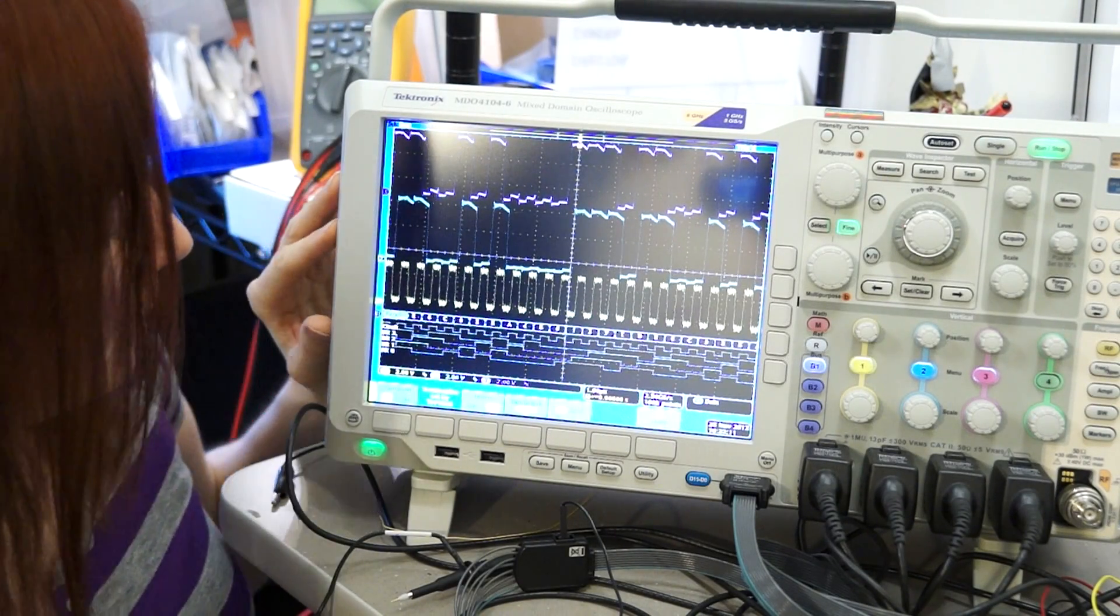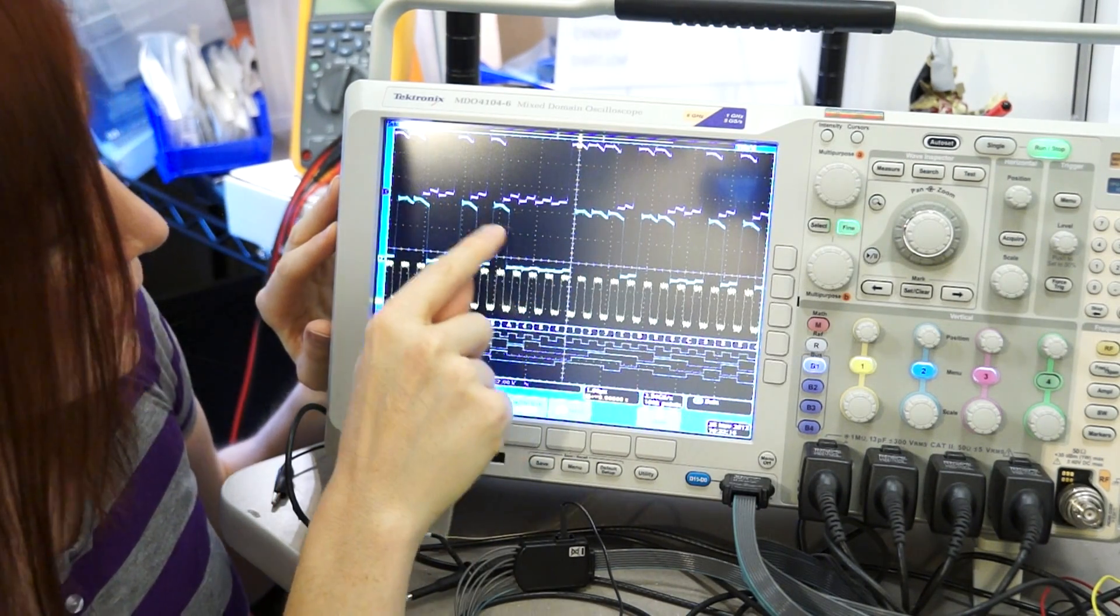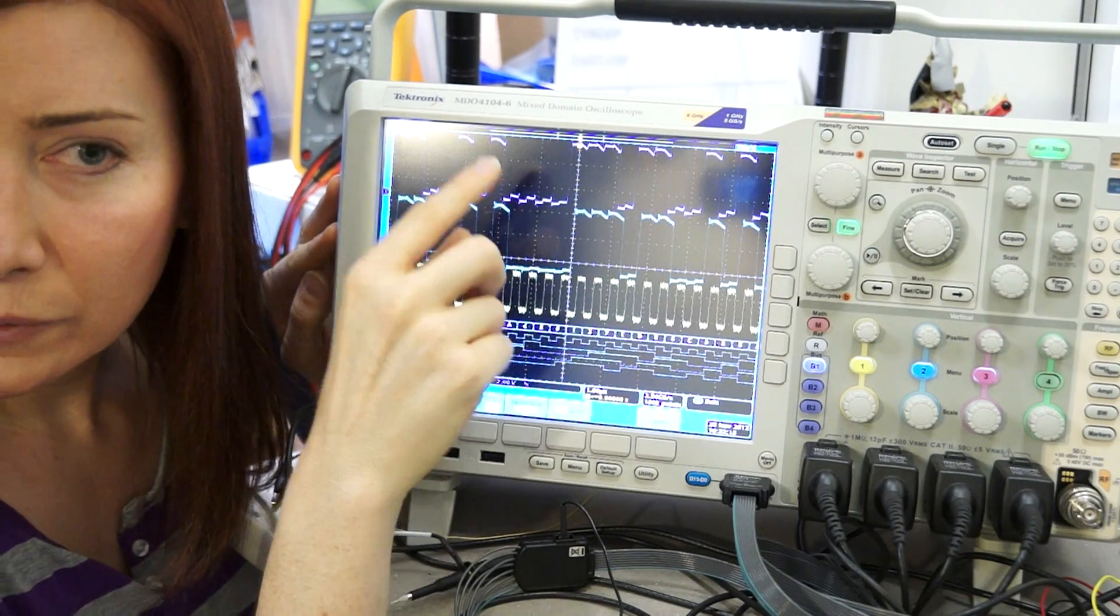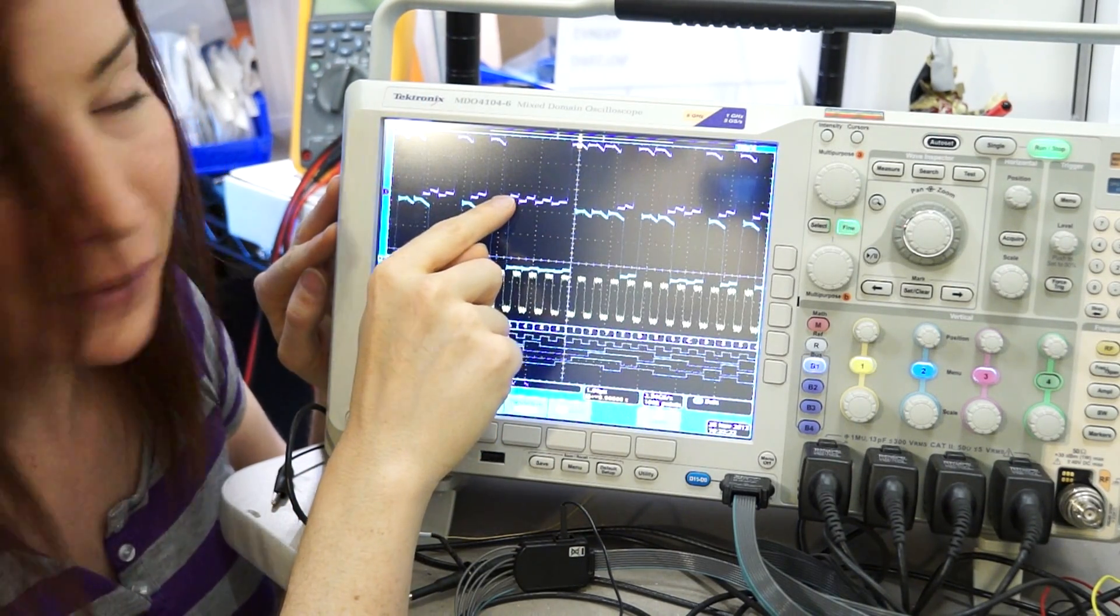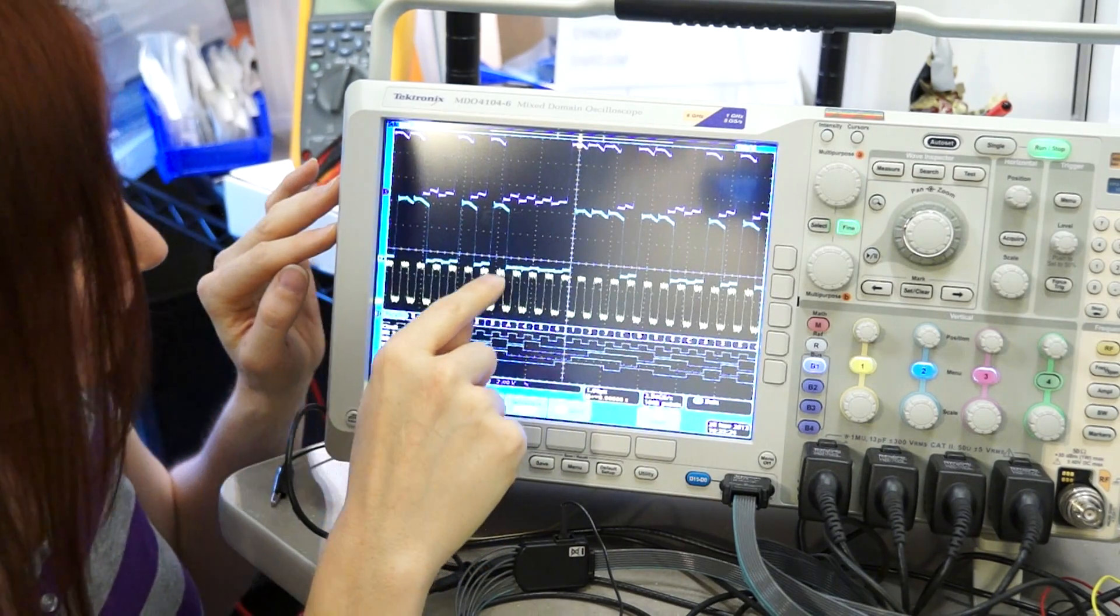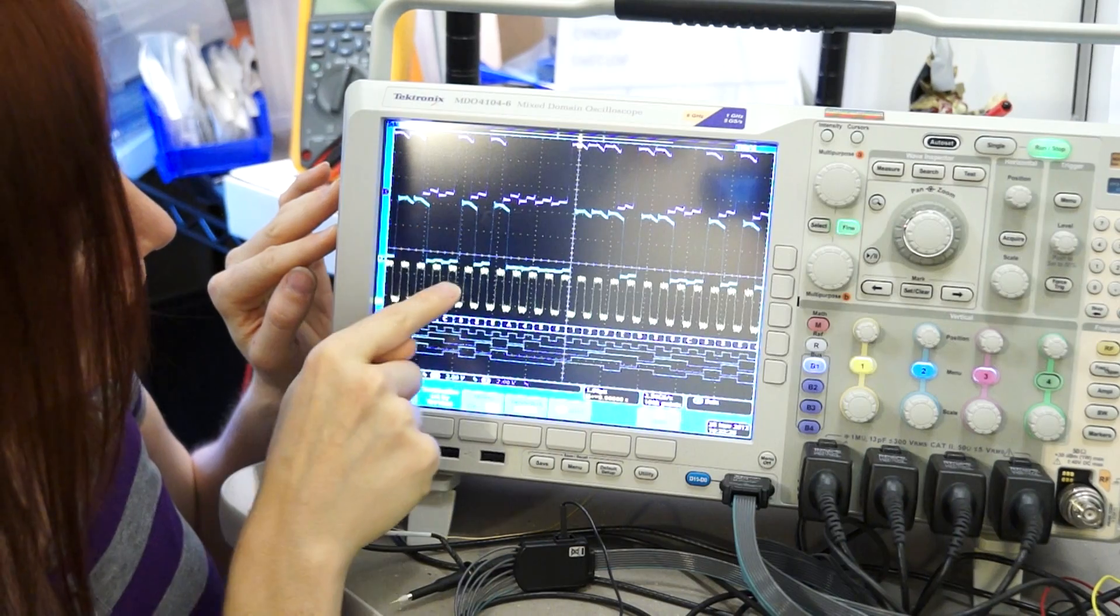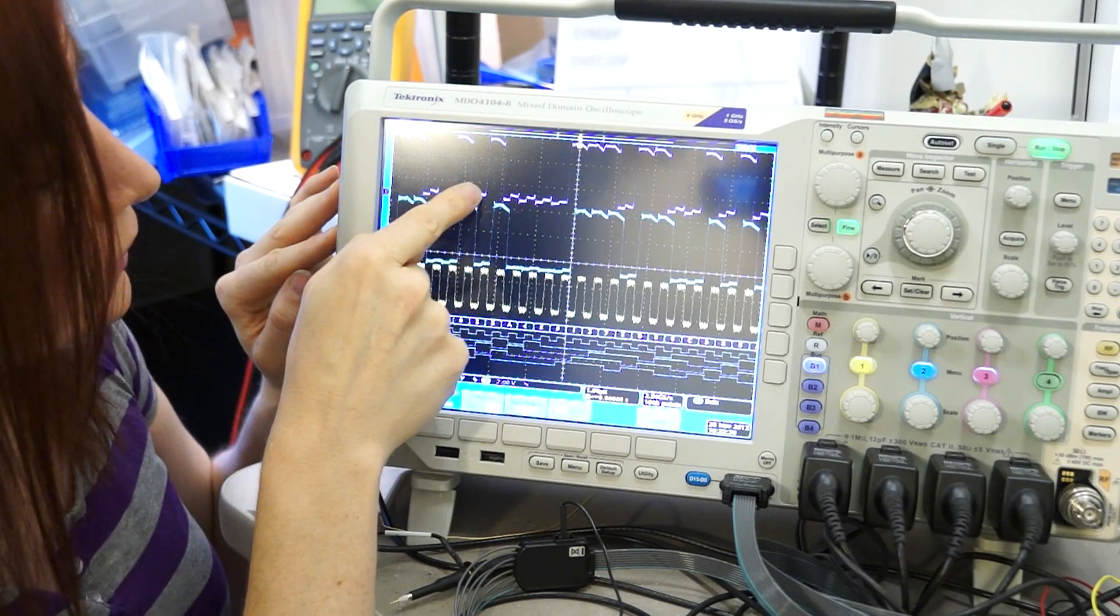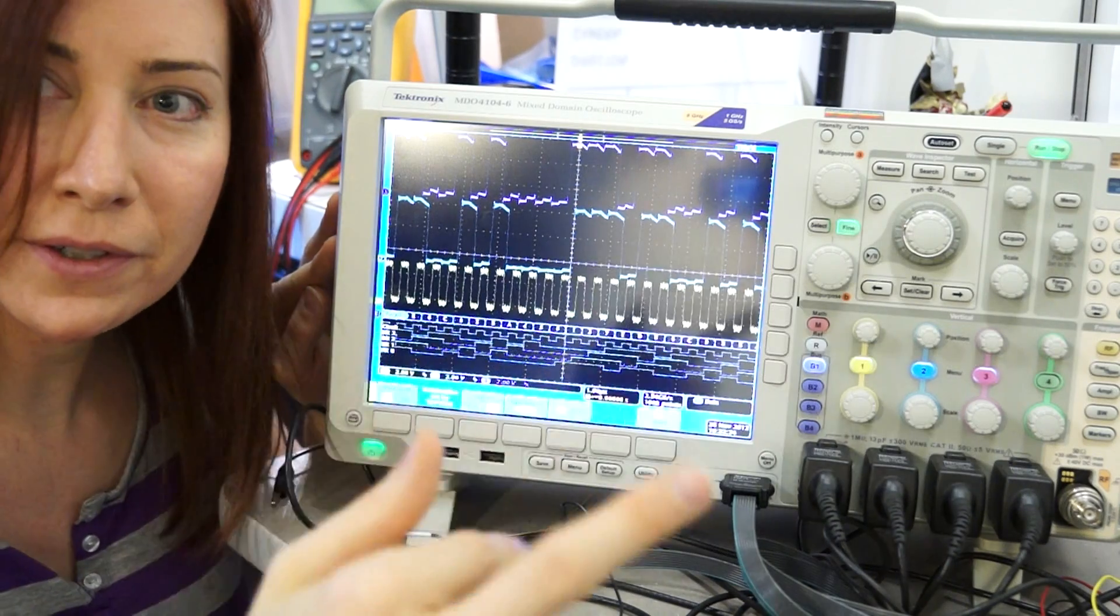If we take a look at the scope, right here I have two nodes. So, one of these nodes would be the node A, the input, and this other one would be the output. And we can see that a bit comes in here, half-clock cycle later gets shifted out. So, master-slave, master-slave, master-slave.